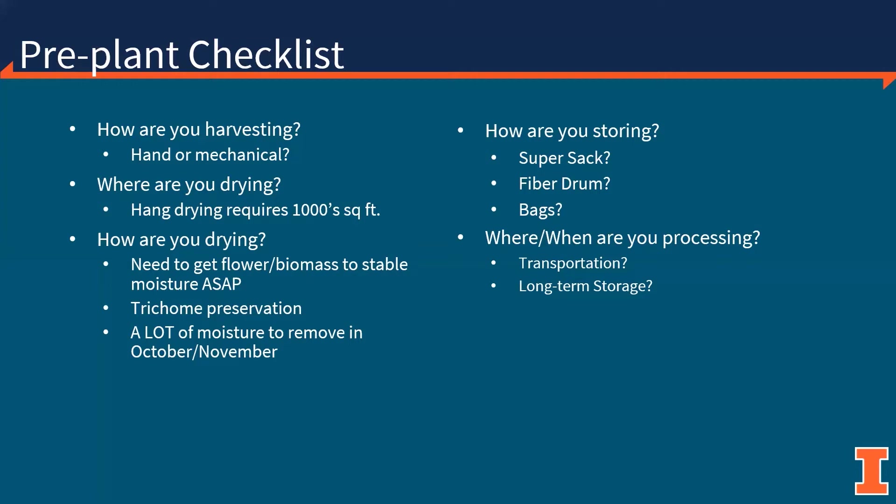Not just where are you drying, but how are you drying? You need to get the flower or biomass to a stable moisture as soon as possible to preserve trichomes and prevent cannabinoid conversion and decarboxylation of your material. We're harvesting these materials typically in October or November, maybe even December in some cases, and so you're going to have a lot of moisture to remove from the floral material. How are you storing? Is this going to be done in super sacks or fiber drums? Are you using polyurethane bags? If so, keeping an eye on moisture and storage conditions will be very important. And probably most importantly, where are you processing? Hopefully you have a processor lined up before you even plant your hemp, keeping in mind transportation costs and long-term storage.